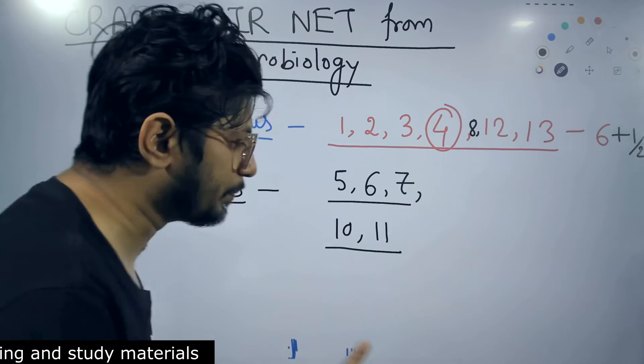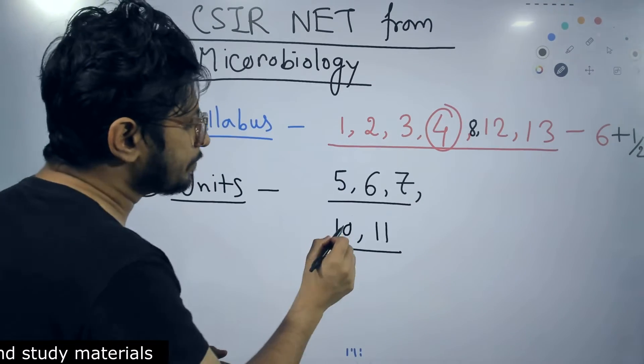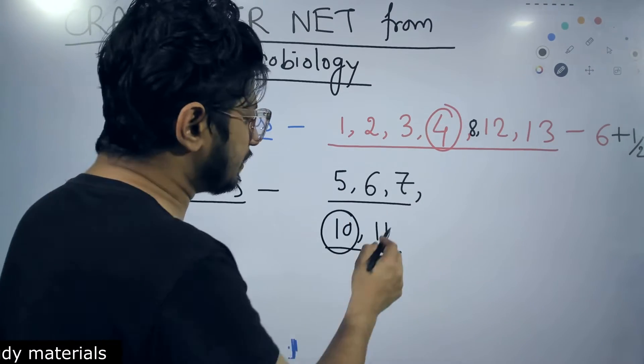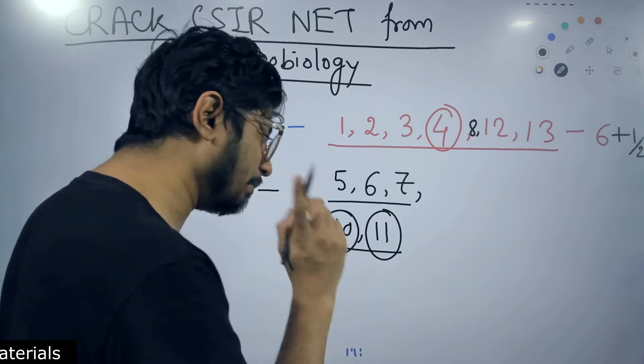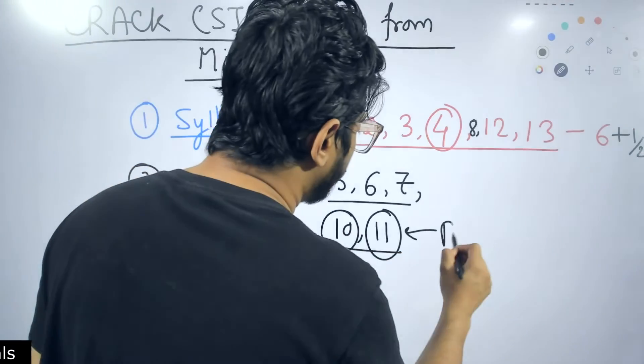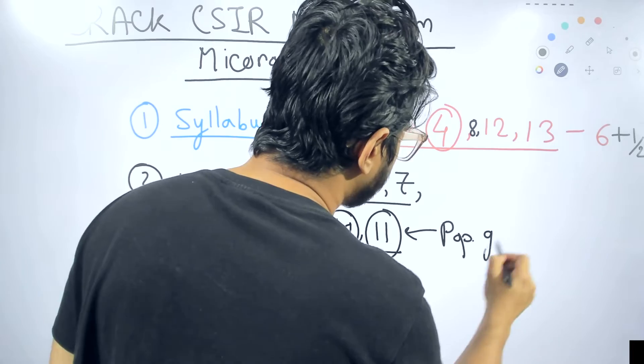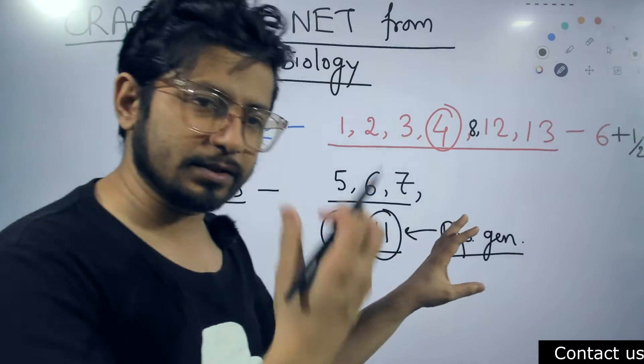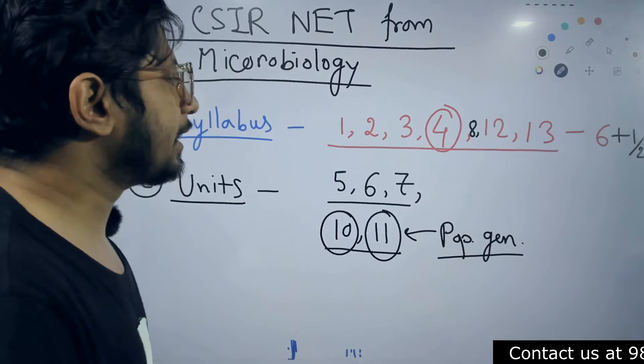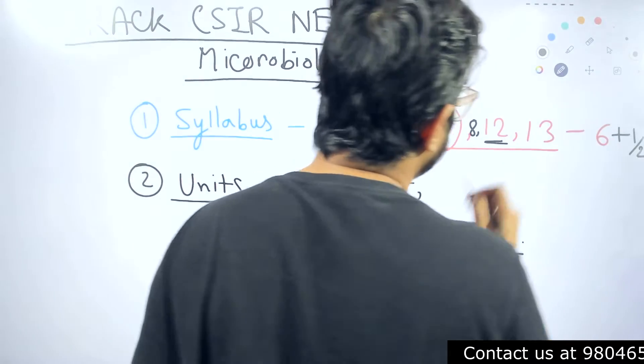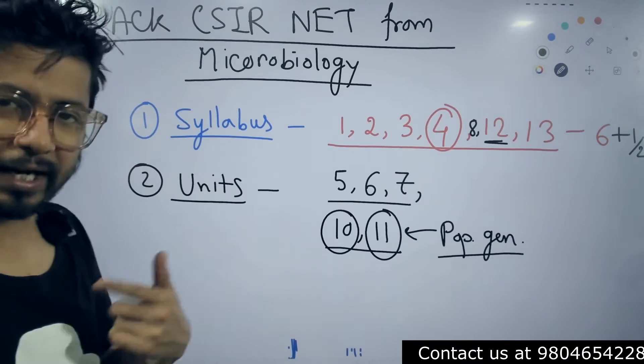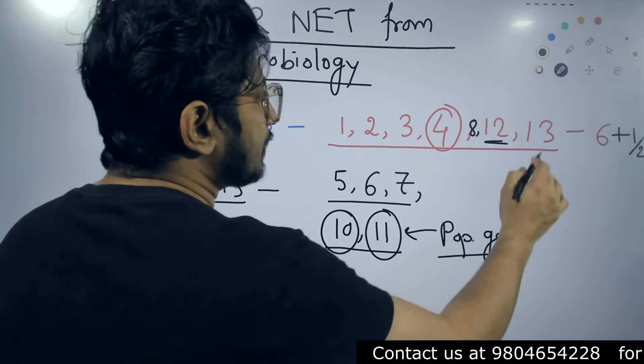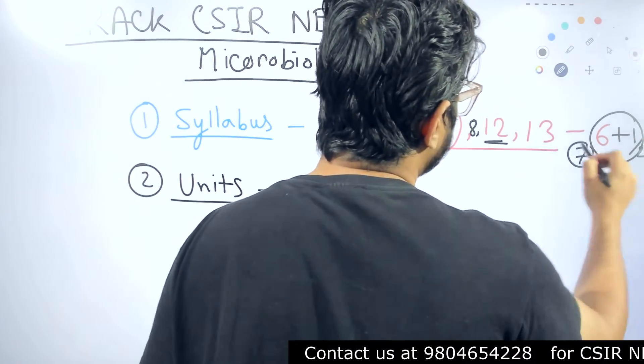Apart from that, Unit 10 and 11 is something that you can also prepare with a little more effort. Unit 10 is a part of classical biology. Unit 11 is also part of classical biology, but Unit 11 has population genetics, Hardy-Weinberg problems and all that. You can prepare with this knowledge of microbiology. And a portion from Unit 12 is already mentioned out there, which is the applied biology common to it.